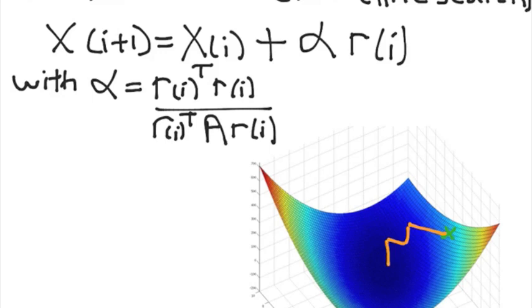Now this alpha_i that I just wrote out, it seems bizarre how I got it, but I would urge you to look at a derivation. There's several papers out there that would derive this update rate for alpha for line search.